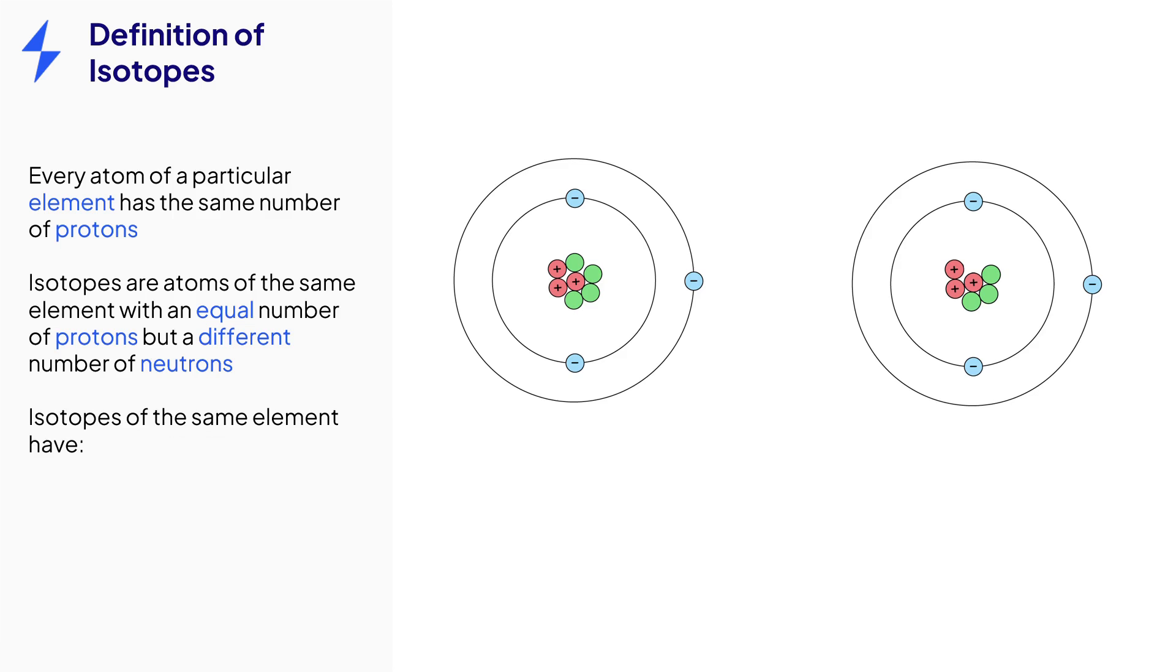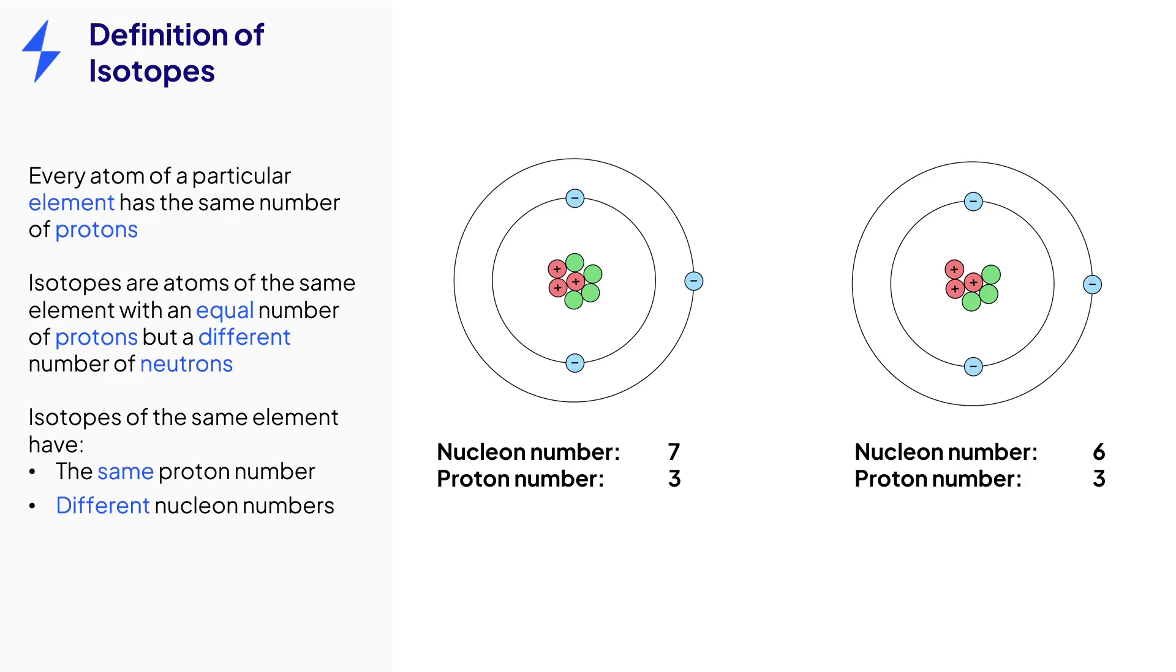This means that isotopes have the same proton numbers but different nucleon numbers. The first isotope has a nucleon number of 7 while the second isotope has a nucleon number of 6. Both have a proton number of 3 as they are both isotopes of the element lithium.